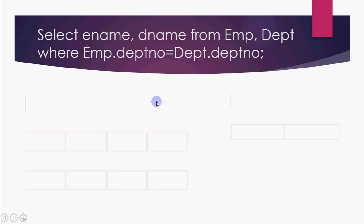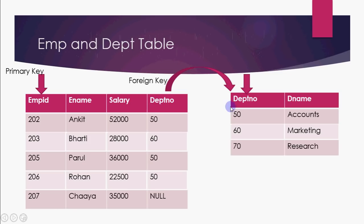When we link two tables on the basis of a foreign key, that's called a natural join. And since the condition used is equality, we call it an equi join. So the query I have to write should show all employees along with their department names.